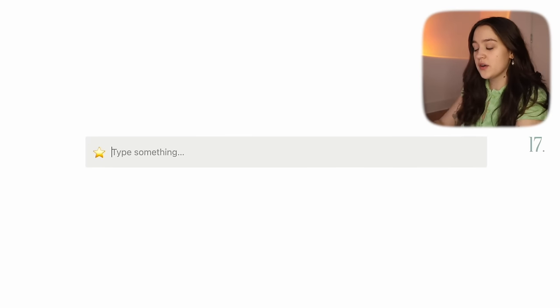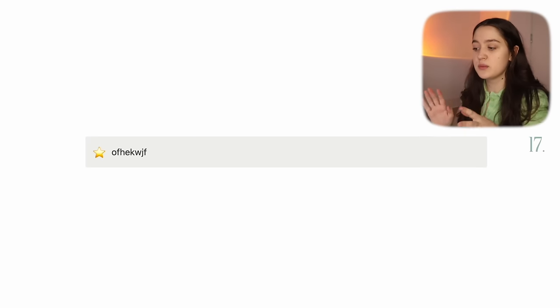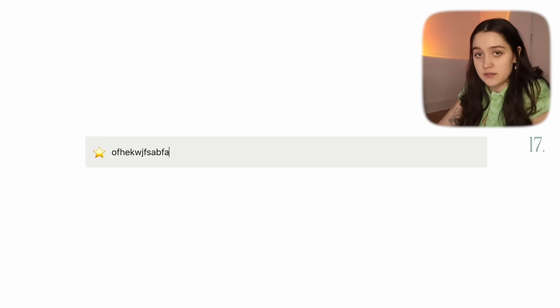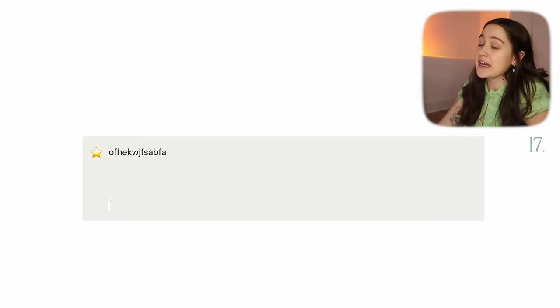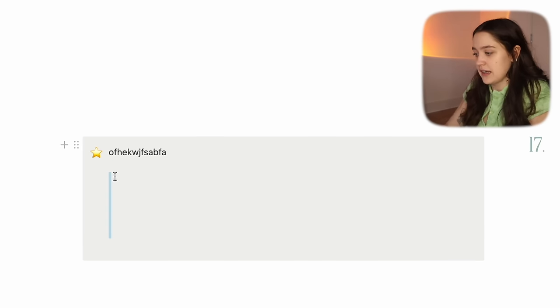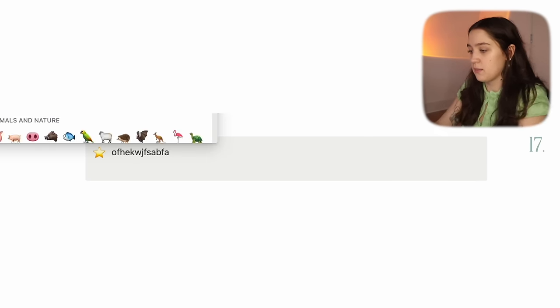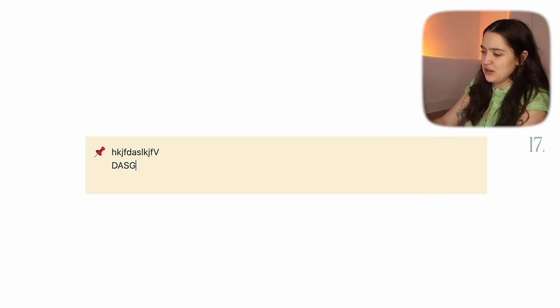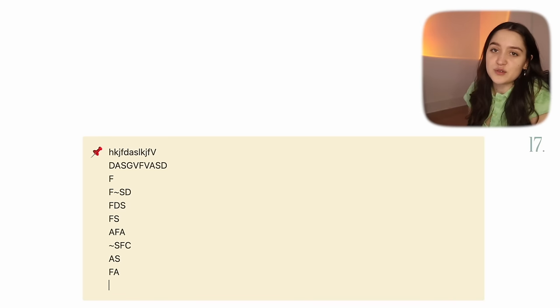My next tip is using a callout as a post-it note. Get a callout, type something in — most people don't use callouts this way because pressing enter just goes to a new line. But this is a tip a lot of people don't know: if you hold Shift while pressing Enter, you stay inside the callout. So you can actually use it as a little post-it note. If you put a pin emoji in there, it literally looks like a little post-it note. It's so cute.